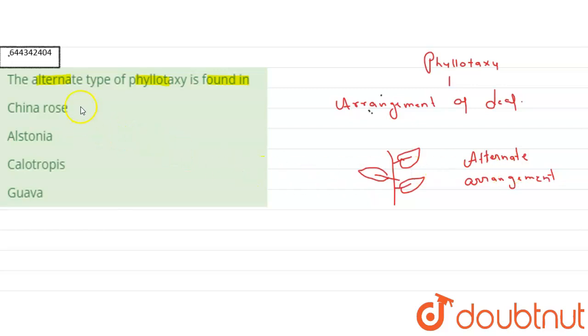China rose, that is the first one, is the correct answer. Alstonia, it is not correct. Calotrops is again wrong. Guava is again wrong. So guys, you mark A as the right answer. It is a question of example, so you have to learn it by heart. Simple guys, thank you.